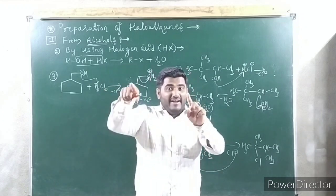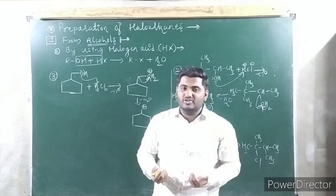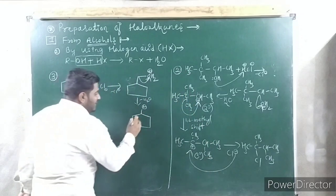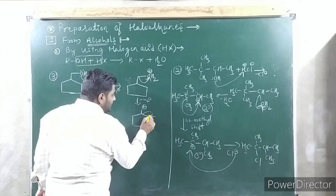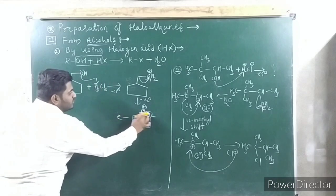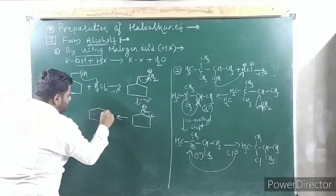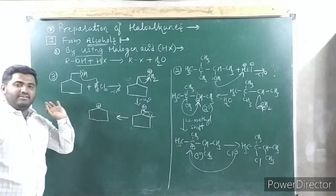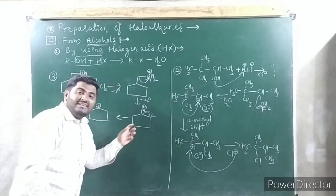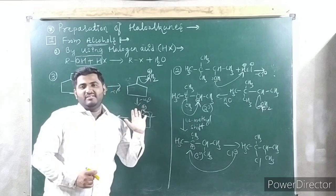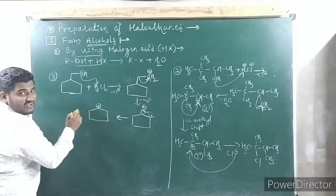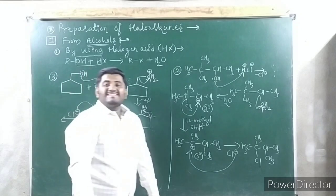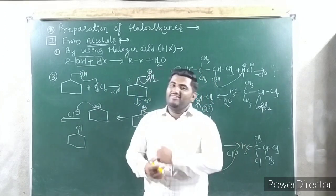In the earlier two examples, shifting of hydrogen or methyl took place. Here, ring expansion occurs. Depending on the compound, you get different types of rearrangement. Ring expansion means the 5-membered ring becomes a 6-membered ring — 5-membered ring has ring strain, 6-membered ring is more stable. So one carbon joins the ring: 1, 2, 3, 4, 5 and one more — total 6-membered ring with a positive charge. That halogen (Cl⁻) attacks, and you finally get chlorocyclohexane.